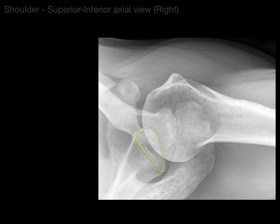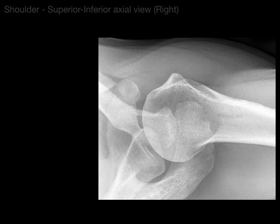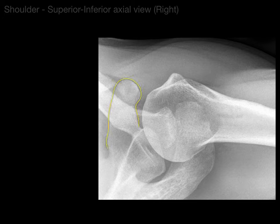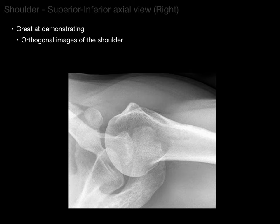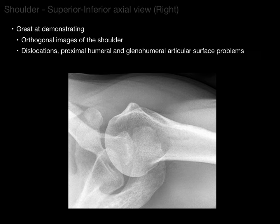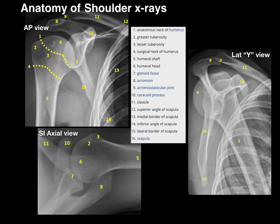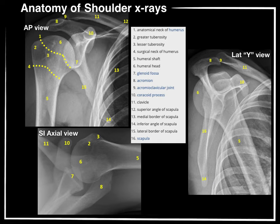In the axial view we also see the glenoid cavity or glenoid fossa — the socket of the ball and socket joint — which articulates with the head of the humerus to form the glenohumeral joint. Coursing anteriorly is the coracoid process of the scapula, and the lesser tubercle of the humerus is also visible. This axial view is great for demonstrating orthogonal images of the shoulder at right angles to the AP view, and is useful for assessing dislocations and glenohumeral articular surface problems. And that, my friends, is the anatomy of the shoulder through x-rays — in a nutshell.